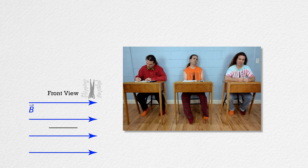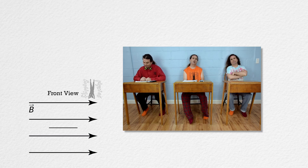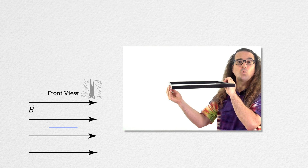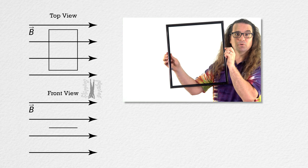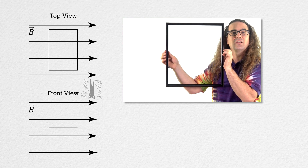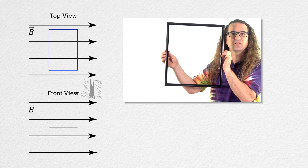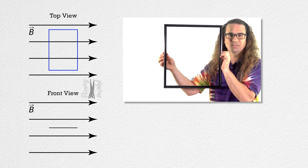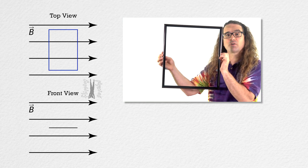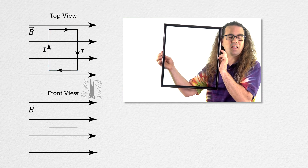The magnetic field is to the right. And again, just to be absolutely clear, in the front view, all you are going to see of the rectangular conducting loop is a straight line representing one side of the loop. In this example, we are going to place an EMF across the loop to cause current, capital I, in the loop.